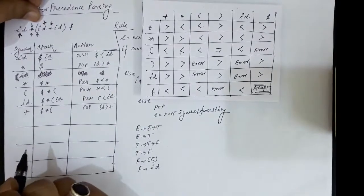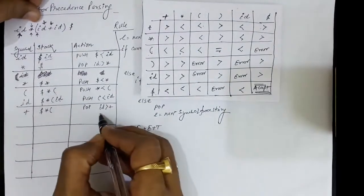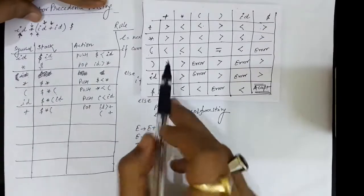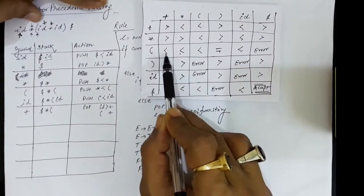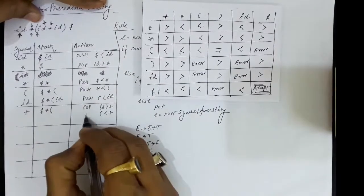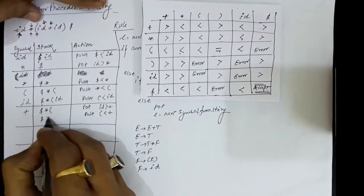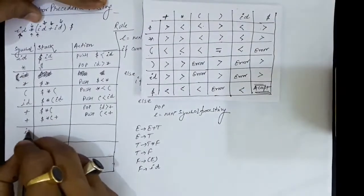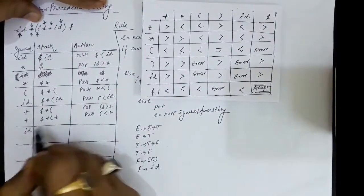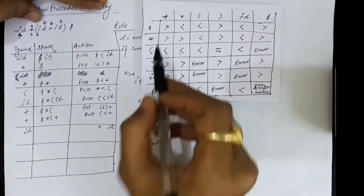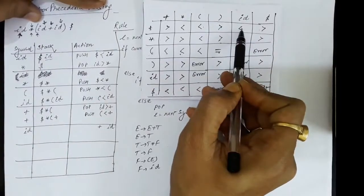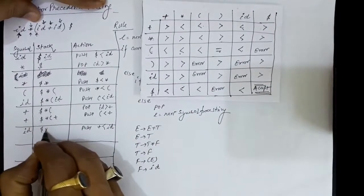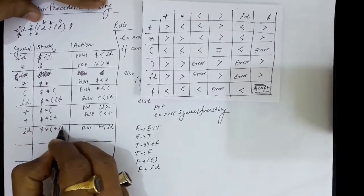We now check the precedence of opening parenthesis over plus — opening parenthesis has lesser precedence than plus, so we push plus onto the stack. Next symbol is id. We check the precedence of plus over id — plus has less precedence than id, so we push id on the stack. The stack now contains dollar, multiplication sign, opening parenthesis, plus, and id.